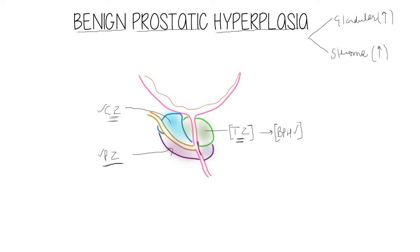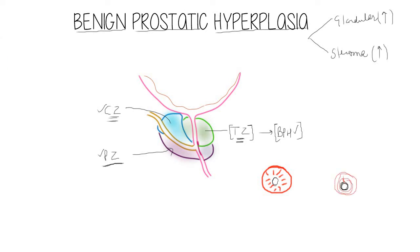Consider the urethra surrounded by the transition zone of the prostate gland. In benign prostatic hyperplasia, the transition zone gets enlarged because of hyperplasia. As a result, it starts obstructing and compressing the urethra from all sides, so the lumen of the urethra decreases in its caliber and becomes something like a slit.